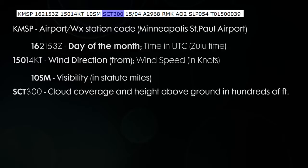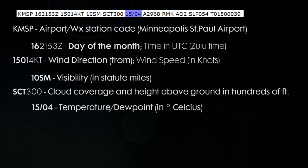In this case, it's scattered clouds at 30,000. The number is in hundreds of feet, so you just add two zeros to the end of it and you should be able to figure out what the altitude is — so in this case, 30,000 feet. This is the temperature and dew point in degrees Celsius. So we have a temperature of 15 degrees and a dew point of 4 degrees Celsius.